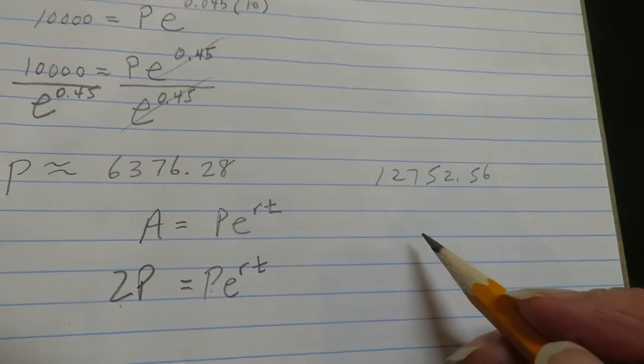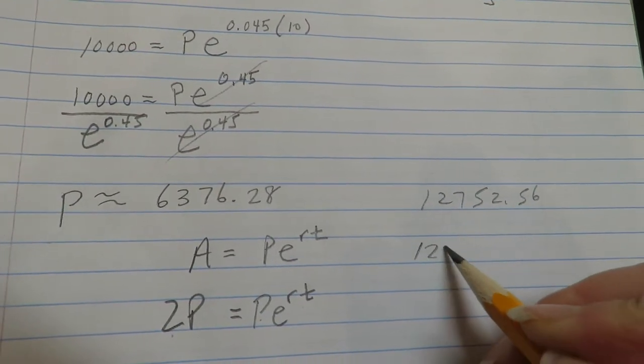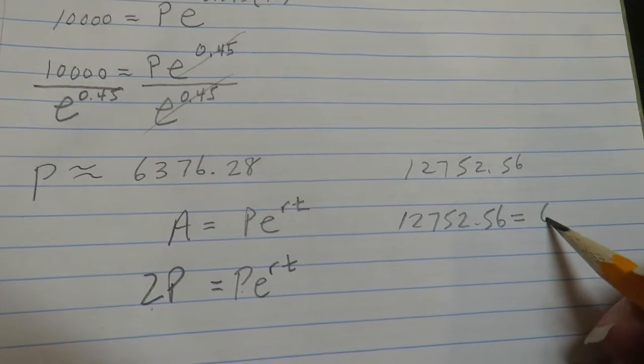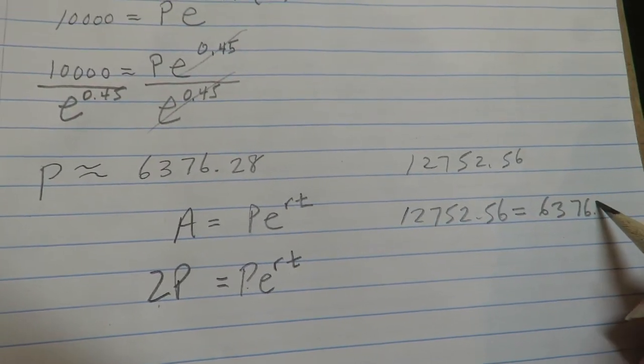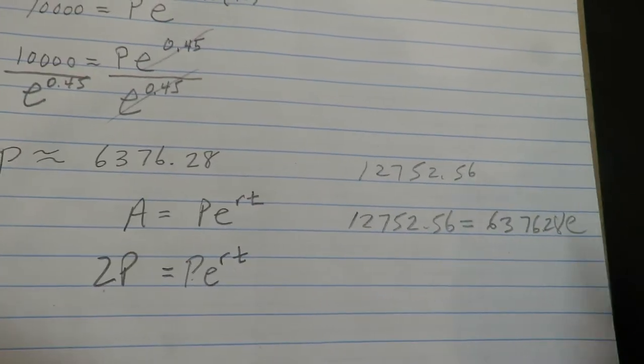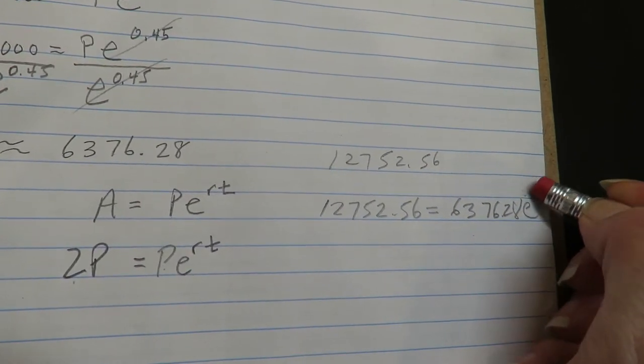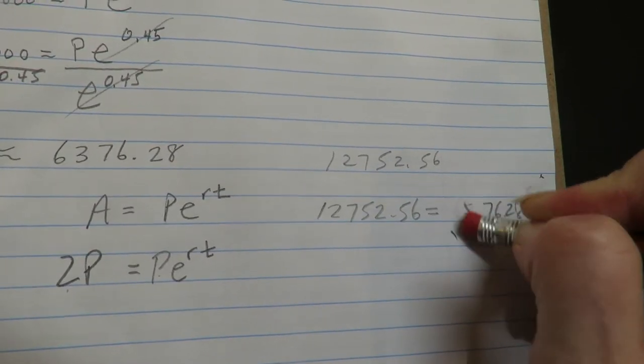Okay, so the other way to do it is to multiply the P value times 2, 0.045t.